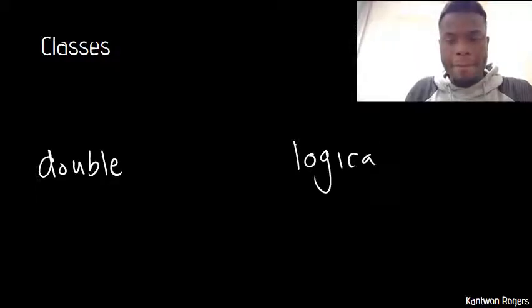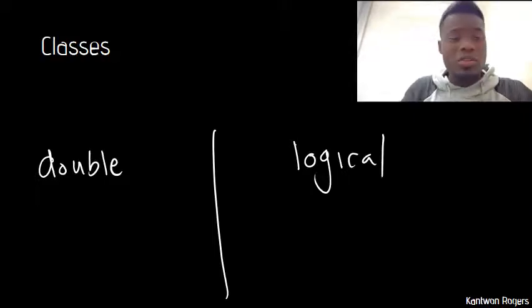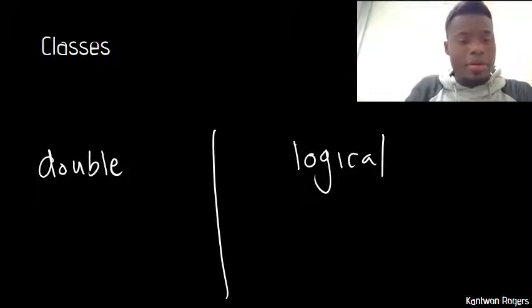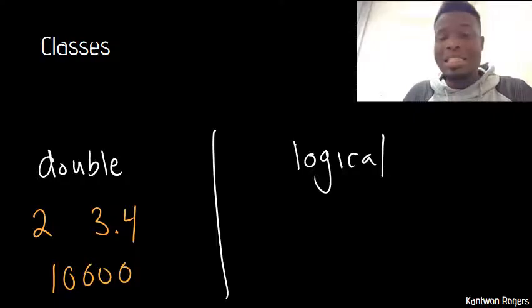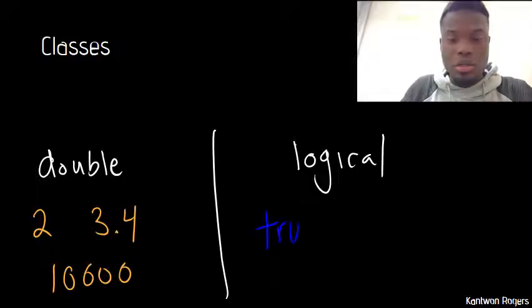Now that we've talked about variables, let's talk about the types of values we can place inside of them. There are many different types of values, also known as classes, but we'll focus on two: double and logical. The class double represents all of our different types of numbers — any number in MATLAB is by default class double, including 2, 3.4, or 10,000. Logical, on the other hand, only has two types of values: true and false.